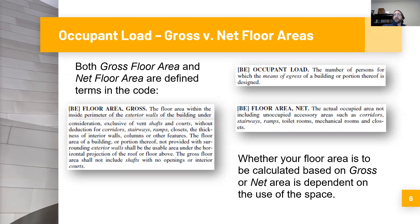Gross floor area is the floor area within the inside perimeter of the exterior walls of the building under consideration, exclusive of vent shafts and courts, without deduction for corridors, stairways, ramps, closets, thickness of interior walls, columns, or other features. That's one of the important parts when talking about an occupant load analysis — you don't get to deduct corridors, stairways, ramps, closets, and other things.